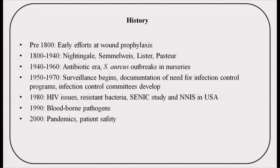Now, let us look at the history of infection prevention and control. If we had to trace the early efforts at wound prophylaxis, we can trace them to almost pre-1800. During the period from 1800 to 1940, we had several healthcare professionals like Nightingale, Semmelweis, Lister, Pasteur, and others who made a significant contribution in understanding infection, the transmission of infection, and certain procedures, processes, and products which can help us to prevent infections within healthcare.